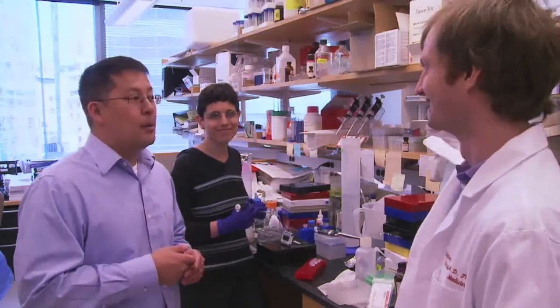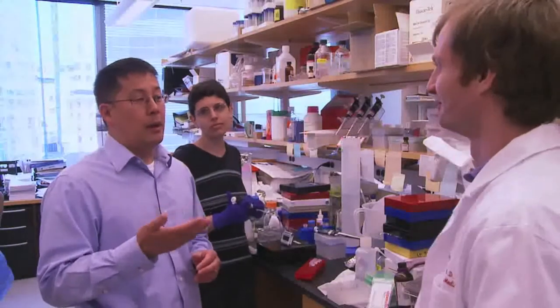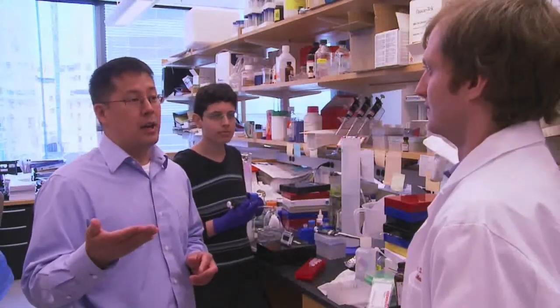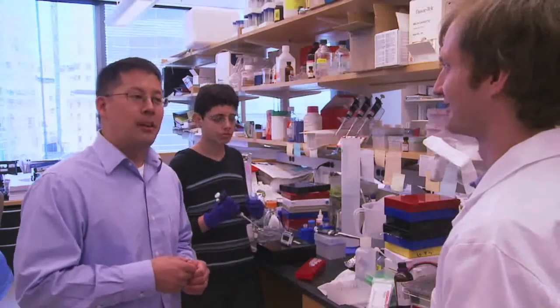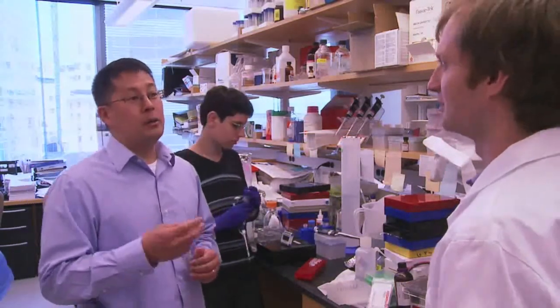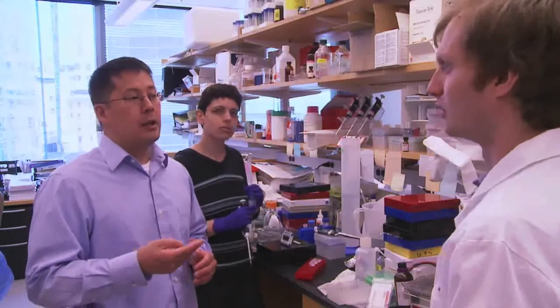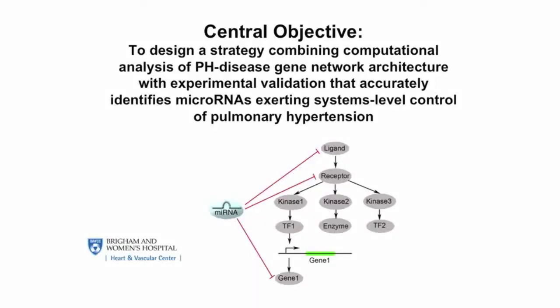And so we have attempted to address these obstacles by the application of computational network theory to hone our hypotheses. However, to date, relevant high-throughput data in PH has been limited, and analysis of systems-level regulation of microRNA networks in general has consisted mostly of computational theories without experimental data. So the central objective of this study was to design a strategy combining computational analysis of PH disease gene network architecture with experimental validation that accurately identifies microRNAs exerting systems-level control of pulmonary hypertension.